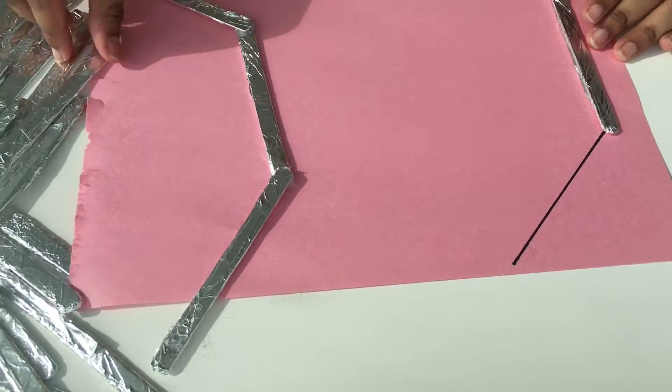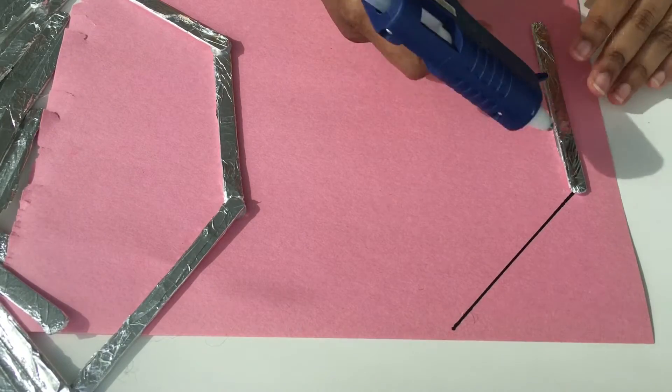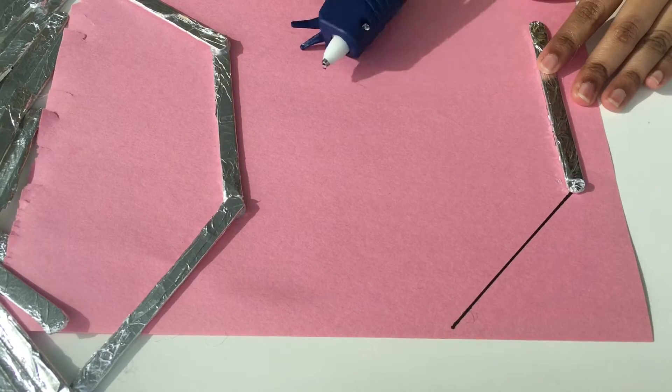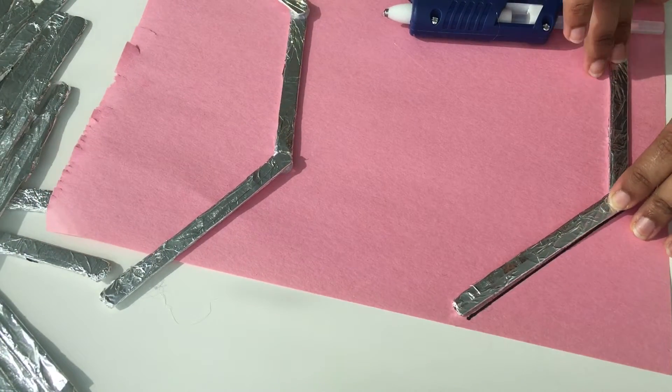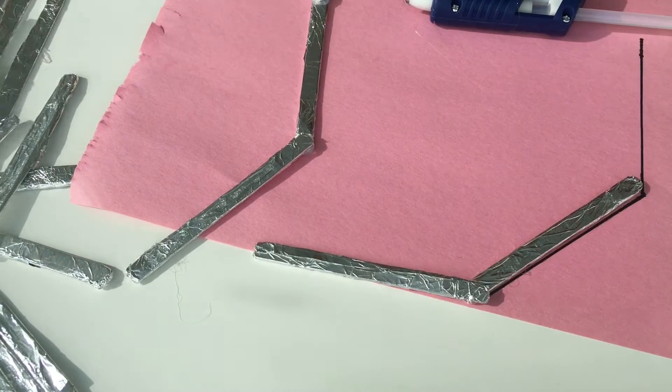I added another stick to the other end in the same way. I repeated the same until I had two halves of the octagon.